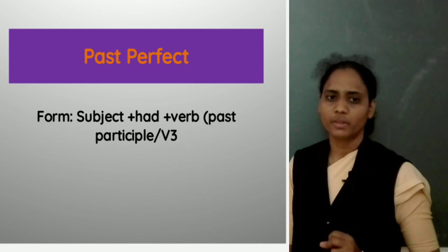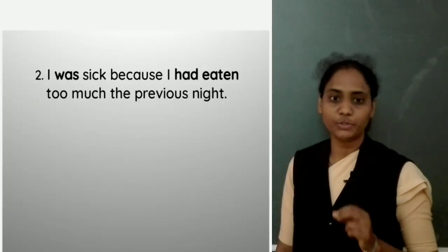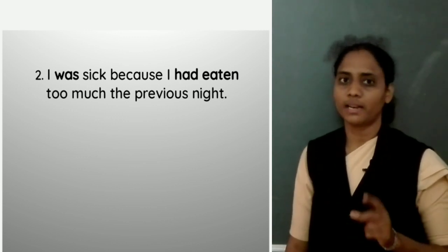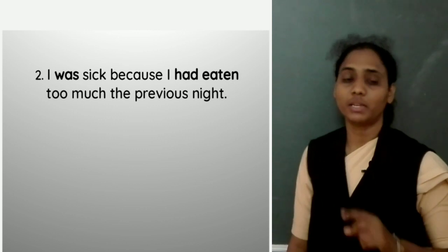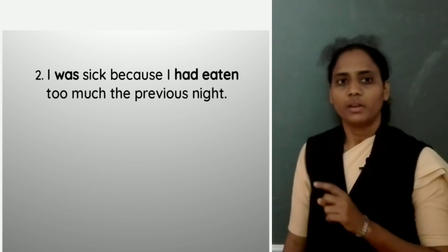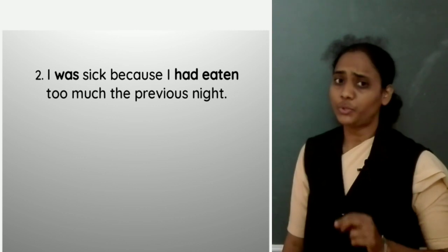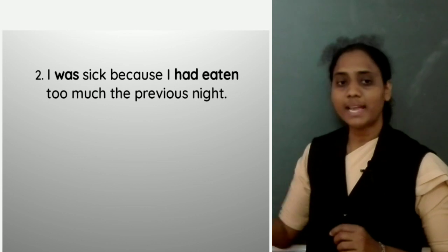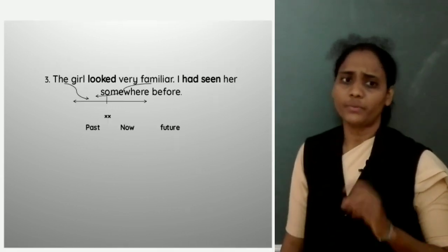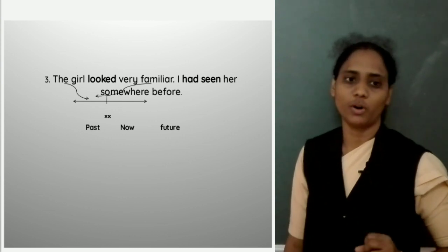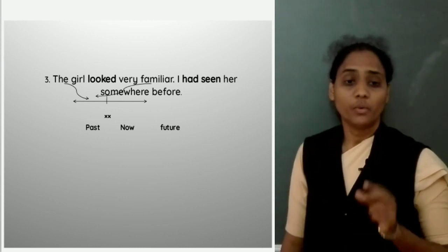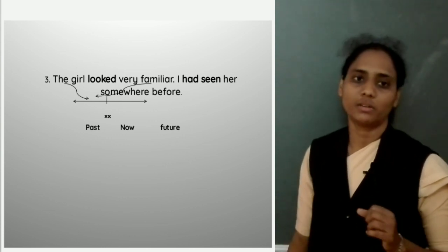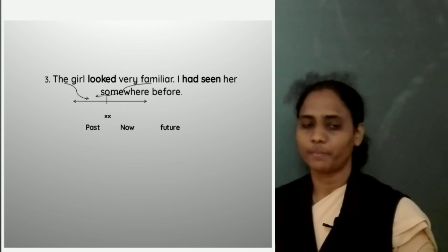Here is another example: I was sick because I had eaten too much the previous night. I was sick — another action — I had eaten too much the previous night. Which happened first? I had eaten too much food, then the next day I was sick. Another example: The girl looked very familiar. I had seen her somewhere before. First I had seen her somewhere — maybe a few years before — so she looked very familiar.